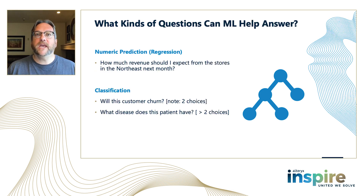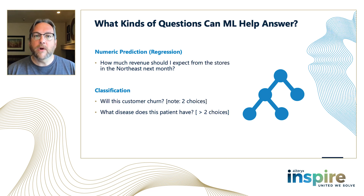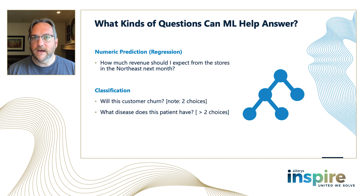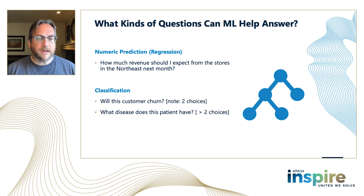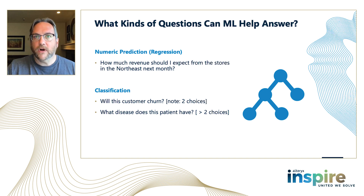So what kinds of questions can machine learning help answer? Really we're talking here about numeric prediction or classification. A numeric prediction involves predicting a continuous number, and classification means predicting that something falls within two or more classes. We break those apart into binary classification — predicting something that falls into two different classes, like true or false, fraud or not fraud — and multi-class classification, which is something that can fall into a number of classes, usually between three and a hundred.